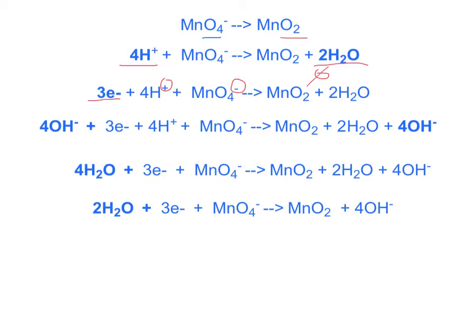And now, here's the difference of balancing in a basic solution. We have to add OH- ions in order to balance out our H+ ions. So we have four H+ ions, so we add four OH- ions to both sides. As we did in the prior half reaction, these four OH- and four H+ ions create four water molecules.